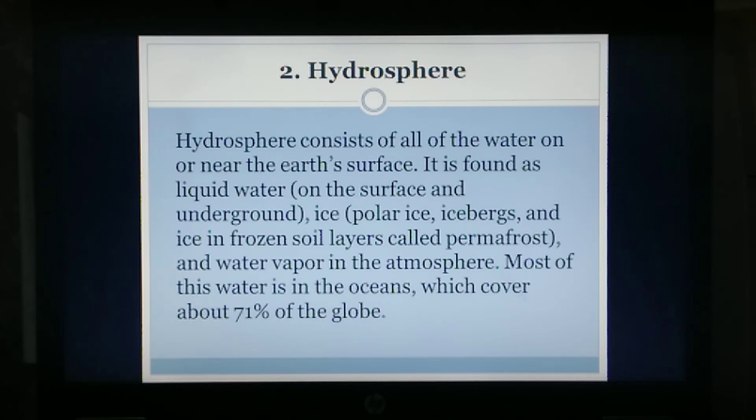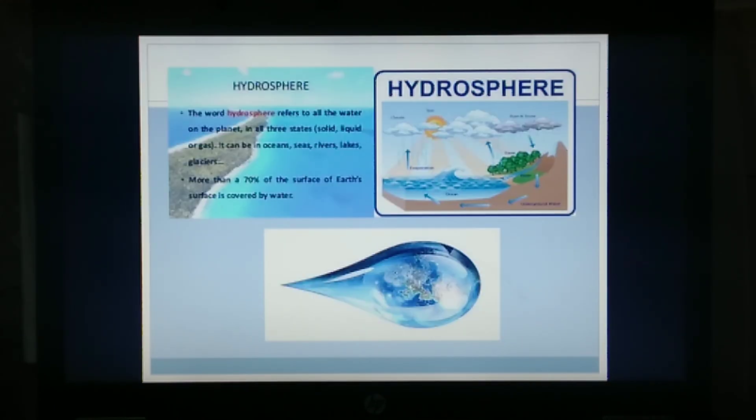Most of this water is in the oceans, which cover about 71% of the globe. It has been estimated that there are 1.386 billion cubic kilometers, or 333 million cubic miles, of water on Earth.